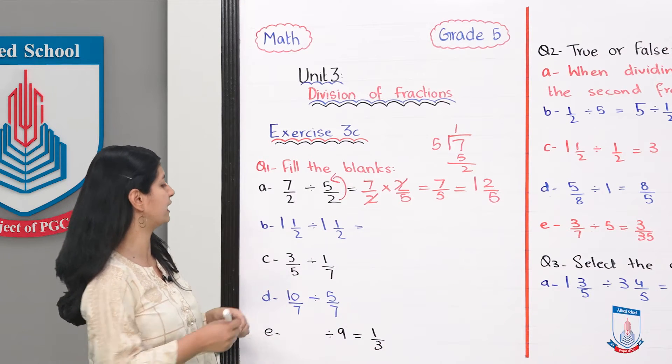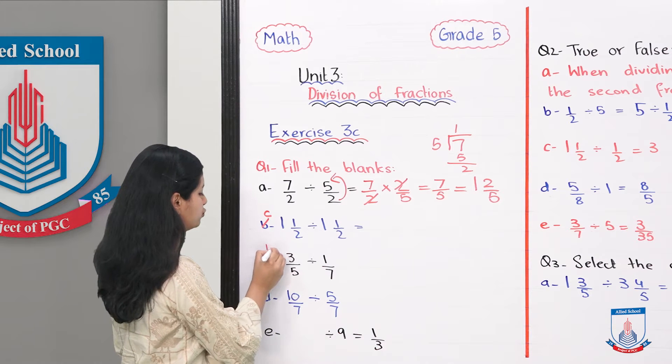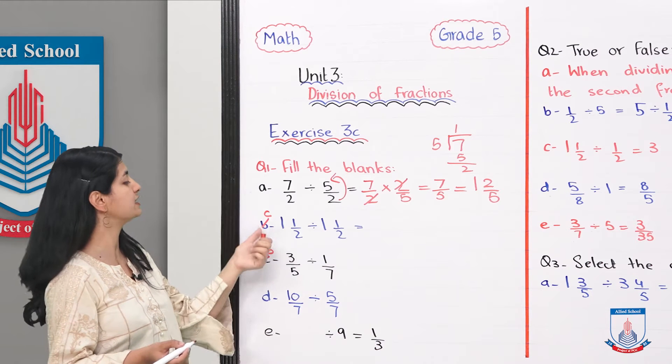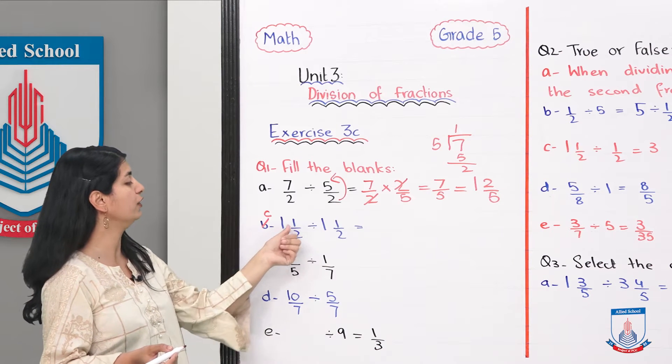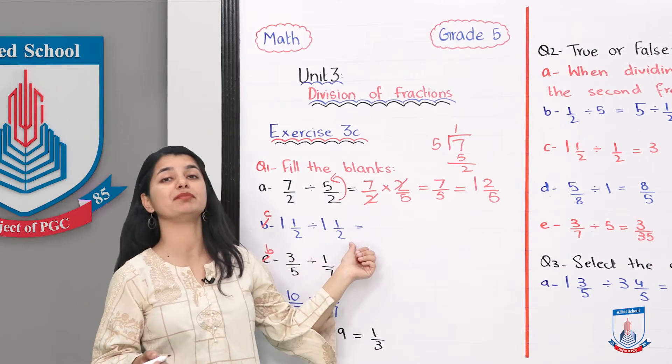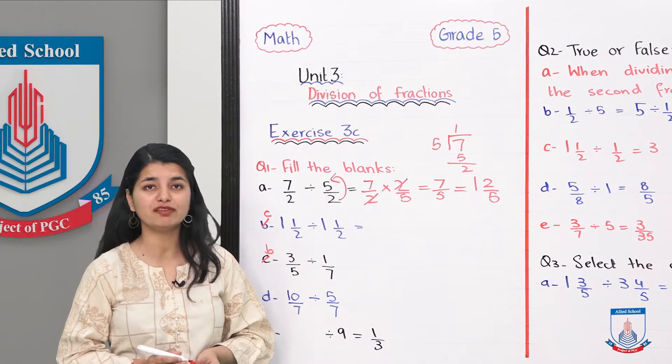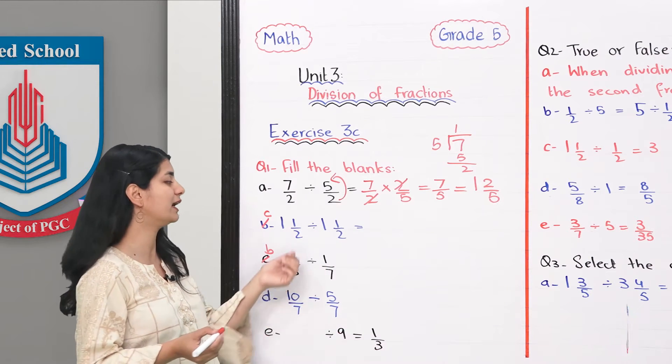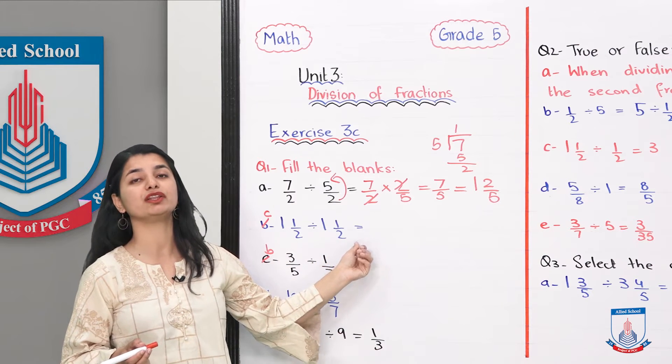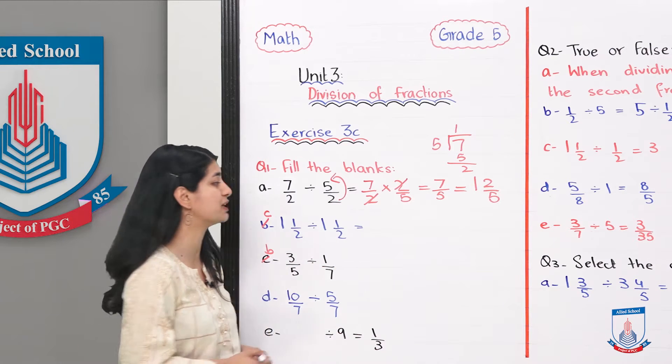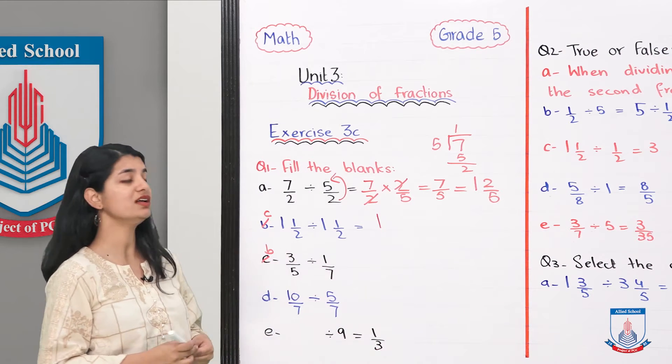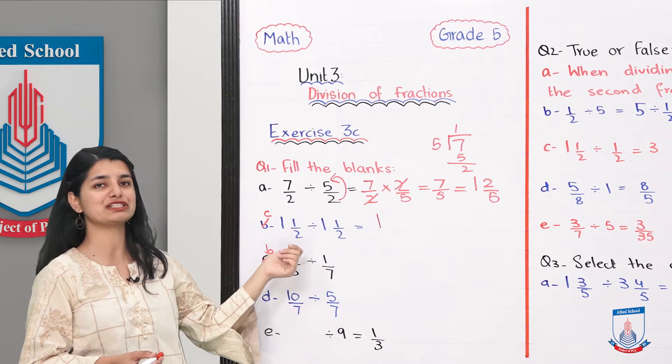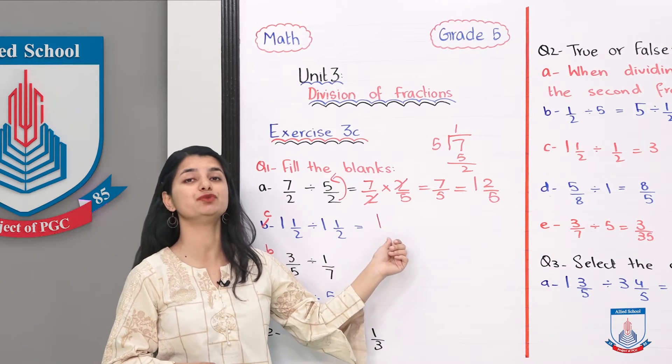Now we will look at part B. If we look at your textbook, technically this is part C, I have by mistake swapped. First we will see part C in your textbook: 1 whole 1 divided by 2 divided by 1 whole 1 divided by 2. When we divide the fraction by 1, it multiplies, so that fraction will come. Hence your answer for this part is 1.